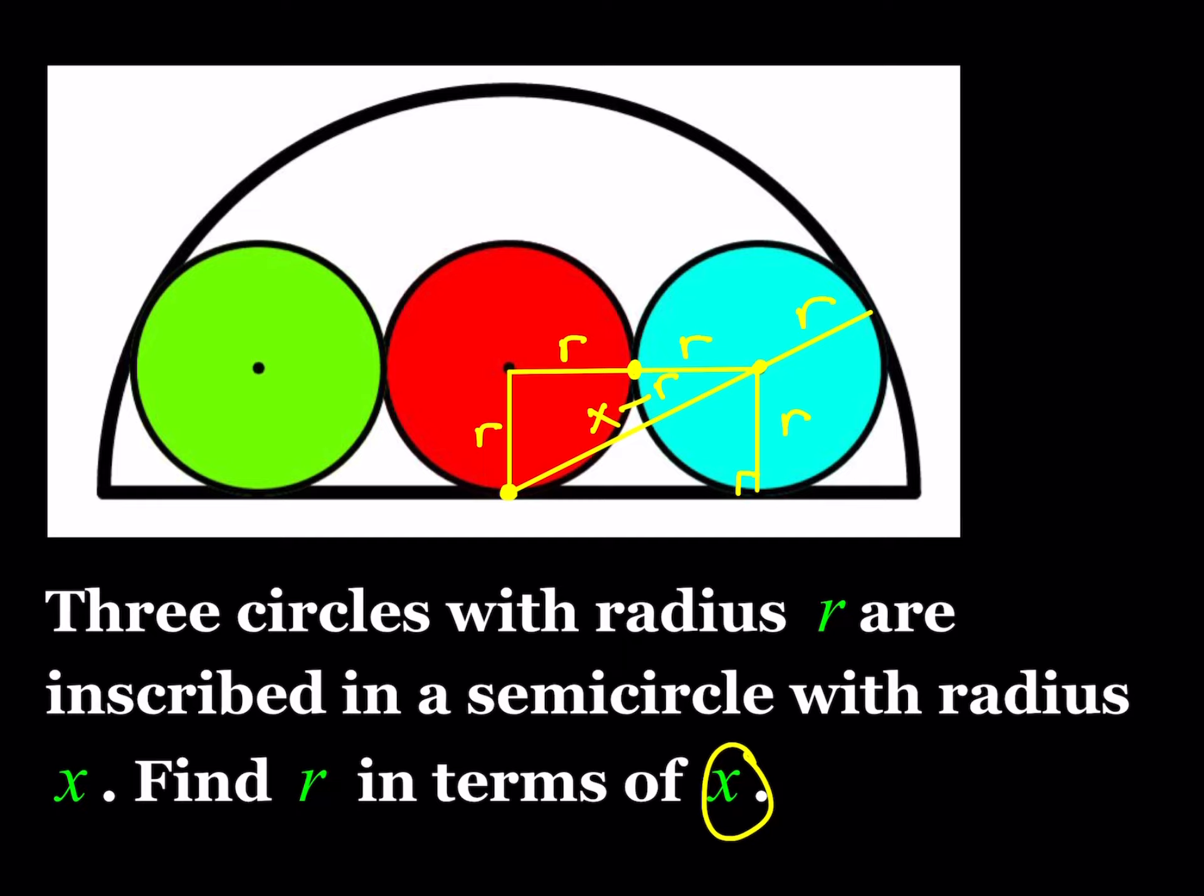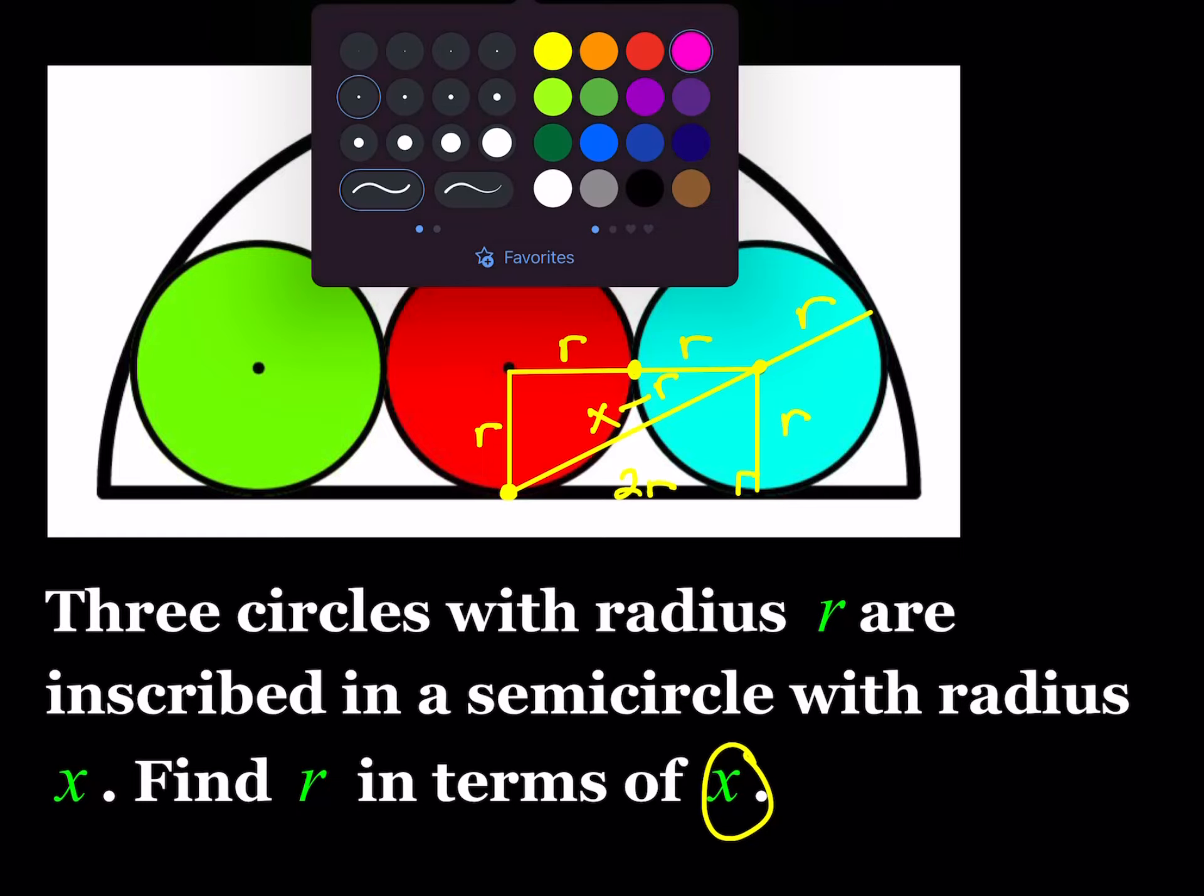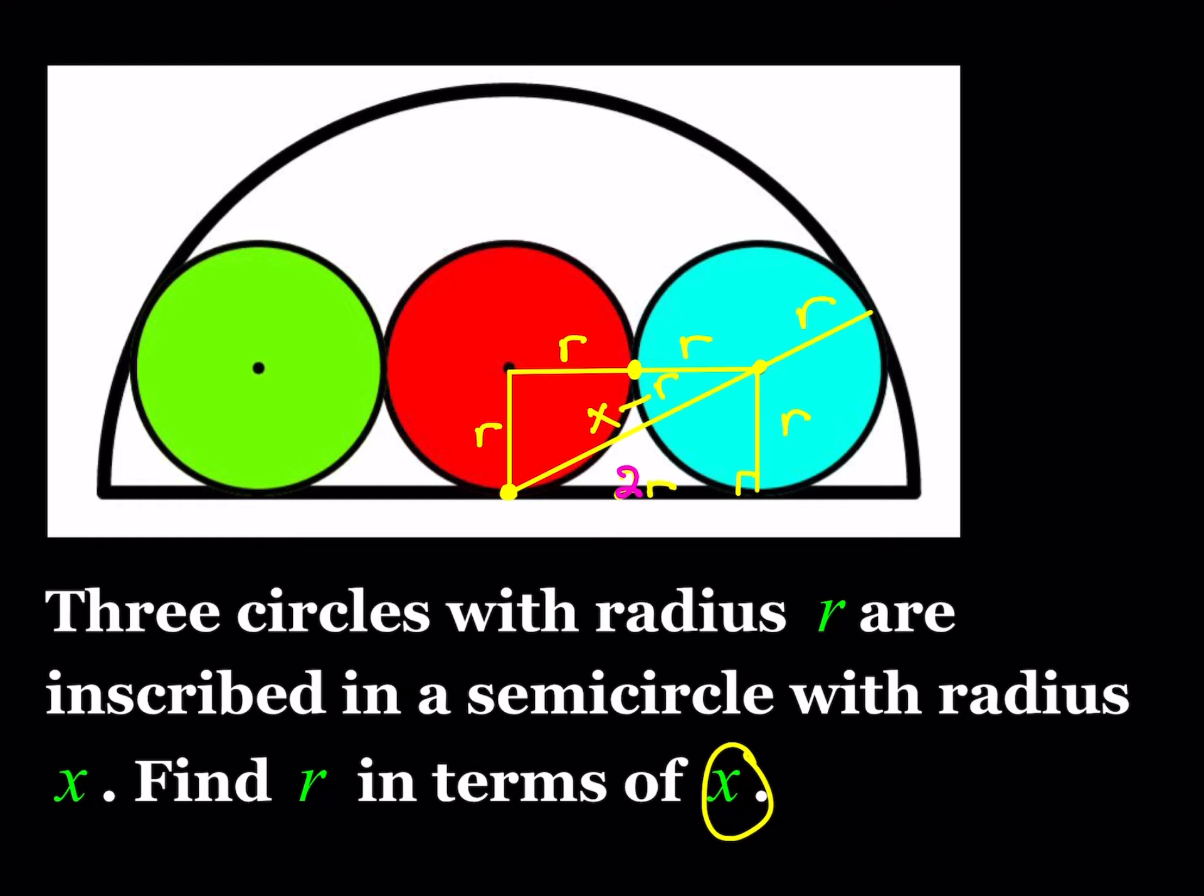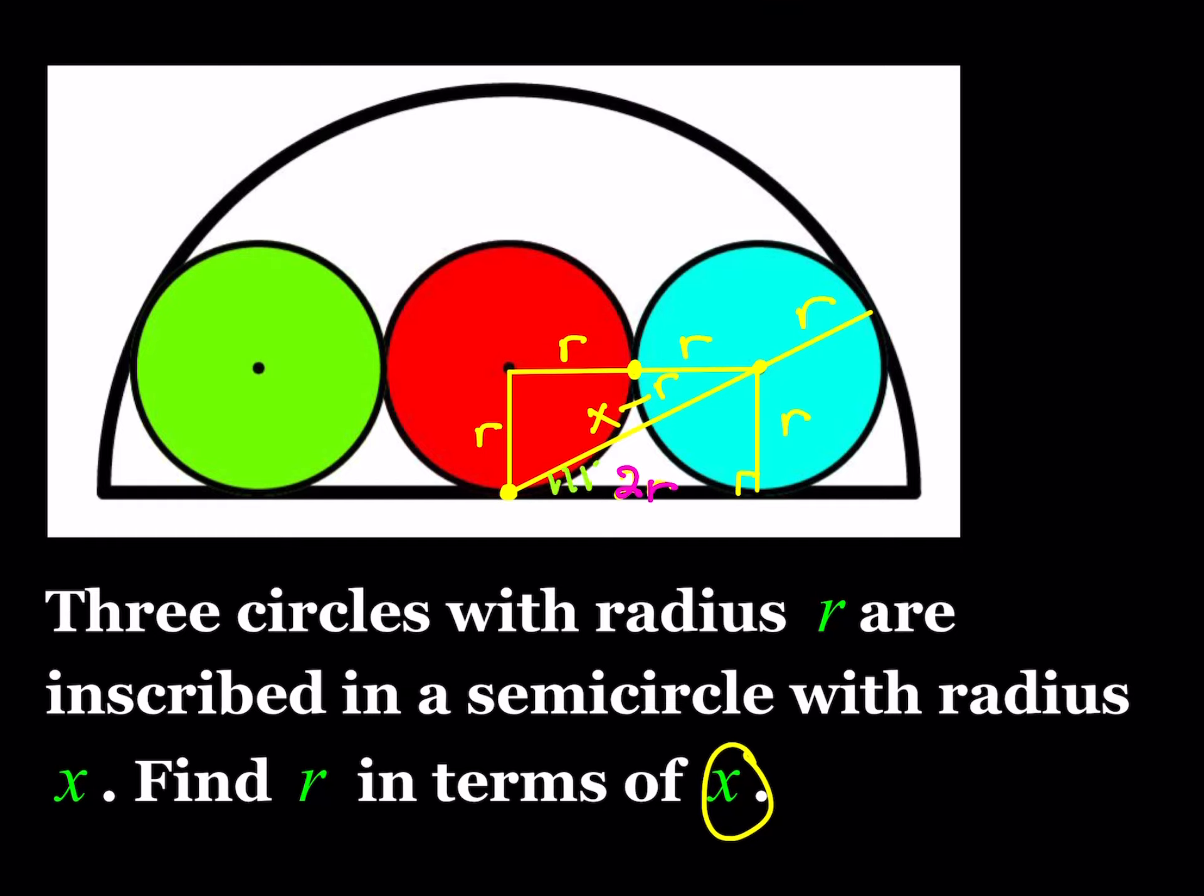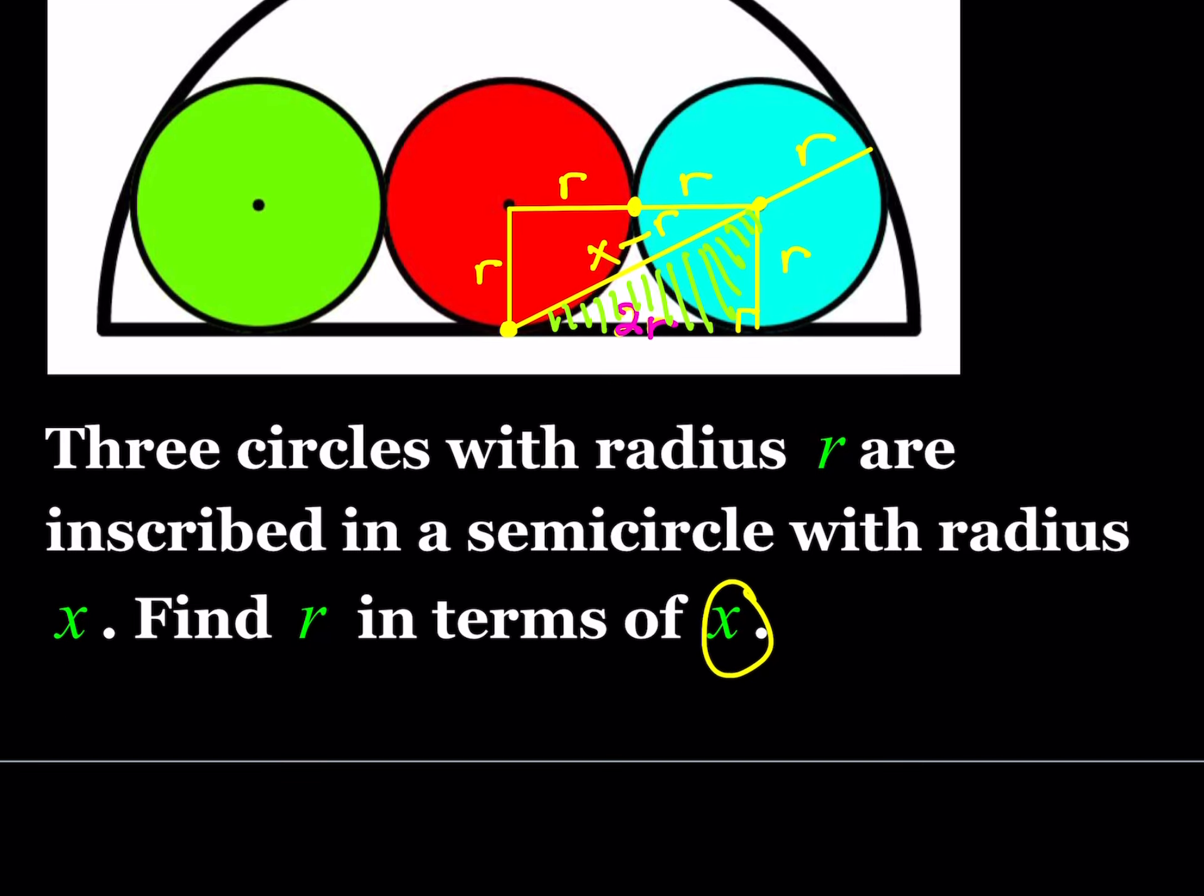Half of the rectangle is going to be a right triangle. This is r, and this is also r, and this is also r, and this is also r. So I basically have a 2r by r rectangle. A rectangle whose base is 2r and whose height is r. I'm going to use the Pythagorean theorem in this right triangle here.